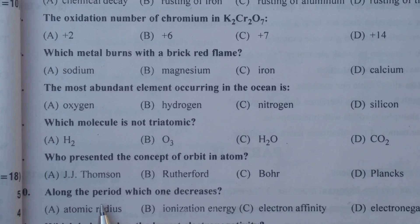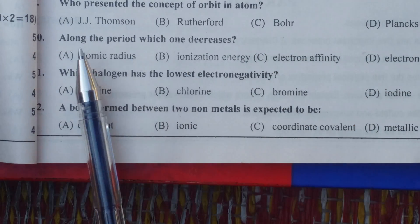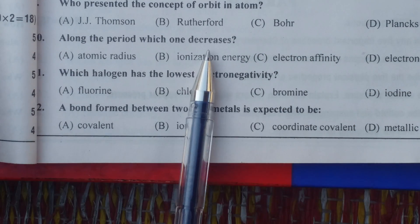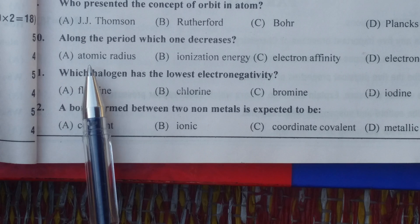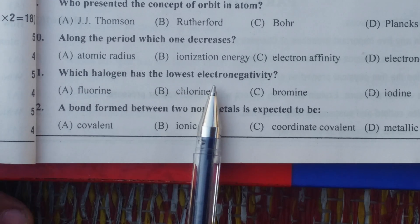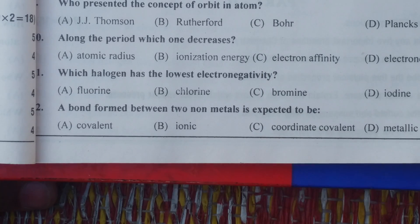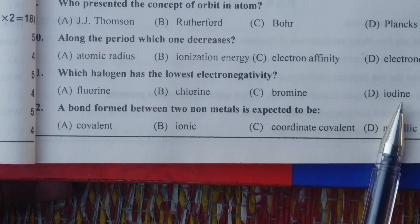Along the period, which one decreases? Atomic radius. Which halogen has the lowest electronegativity? Iodine.